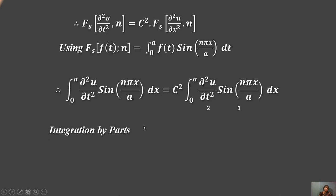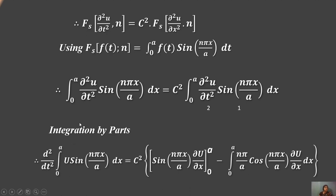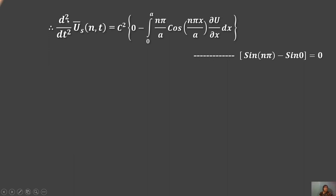The u·v integration by parts rule is applied to the right side. This gives d²/dt²·∫₀ᵃ u·sin(nπx/a) dx = c²·[sin(nπx/a)·(∂u/∂x)]₀ᵃ − c²·∫₀ᵃ (nπ/a)·cos(nπx/a)·(∂u/∂x) dx.